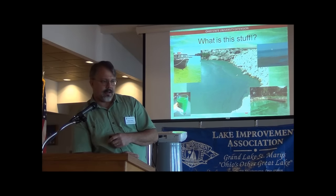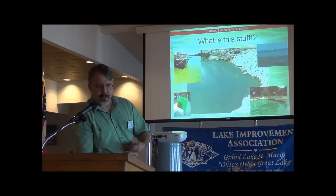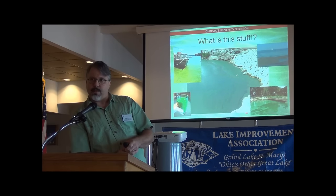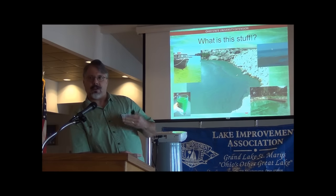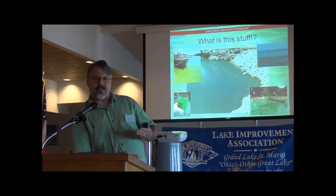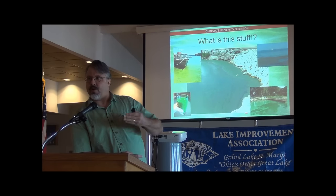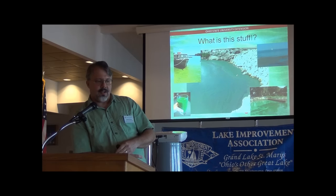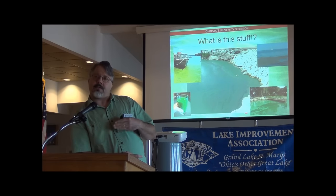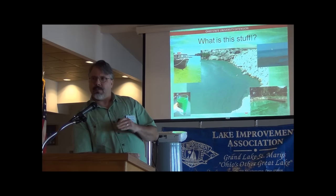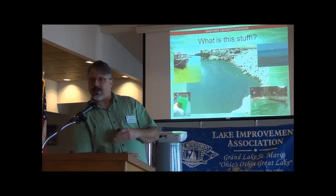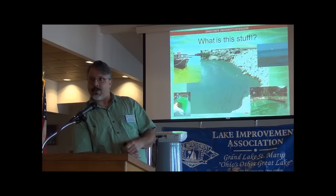The appearance varies a lot. That big shot in the middle is actually a Planktothrix bloom on Grand Lake, so often it will appear as kind of a dark green stain in the water. Microcystis often materializes as bright, opaque green surface scums. Some of the filamentous stuff can appear black when it appears in shallow water. Usually there's some green associated, often some darker colors.